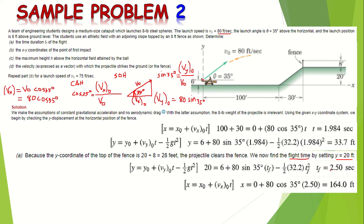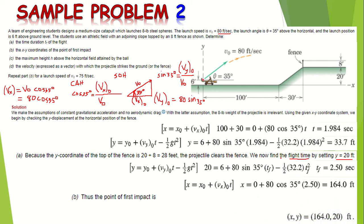With t equal to 2.50 seconds, we calculate the x coordinate using the horizontal displacement formula. Substituting this time gives x equal to 164 feet. So the point of first impact has coordinates x equal to 164 feet and y equal to 20 feet.